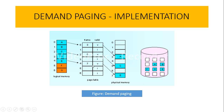Pages marked V are loaded onto physical memory. Pages marked I are invalid — they reside on the disk and are not in physical memory. Whenever the process is executing and tries to access a page not swapped into main memory — for example page 1 which is not swapped in — it will cause a page fault. That gives us the idea of what demand paging is and how it is implemented.